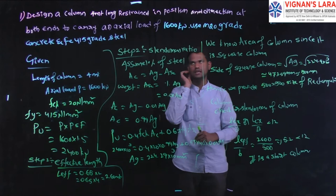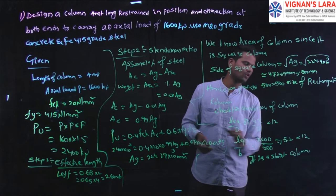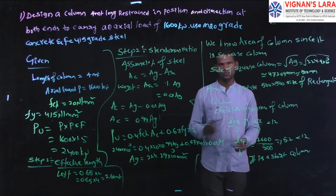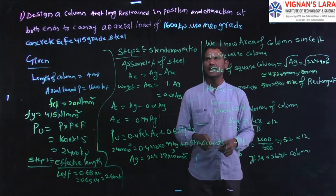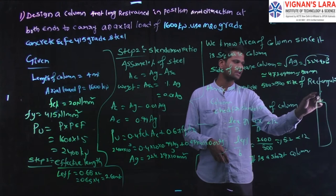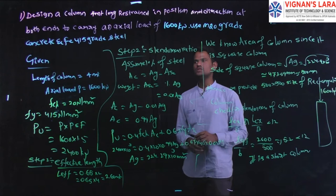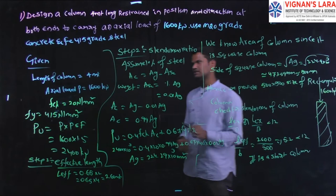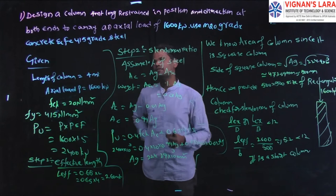Design a column of four meters length — that means the column has a length of four meters. Restrained at both ends means top and bottom are fixed. The column is to carry an axial load of 1600 kilonewton using M20 grade of concrete and FE415 grade of steel.